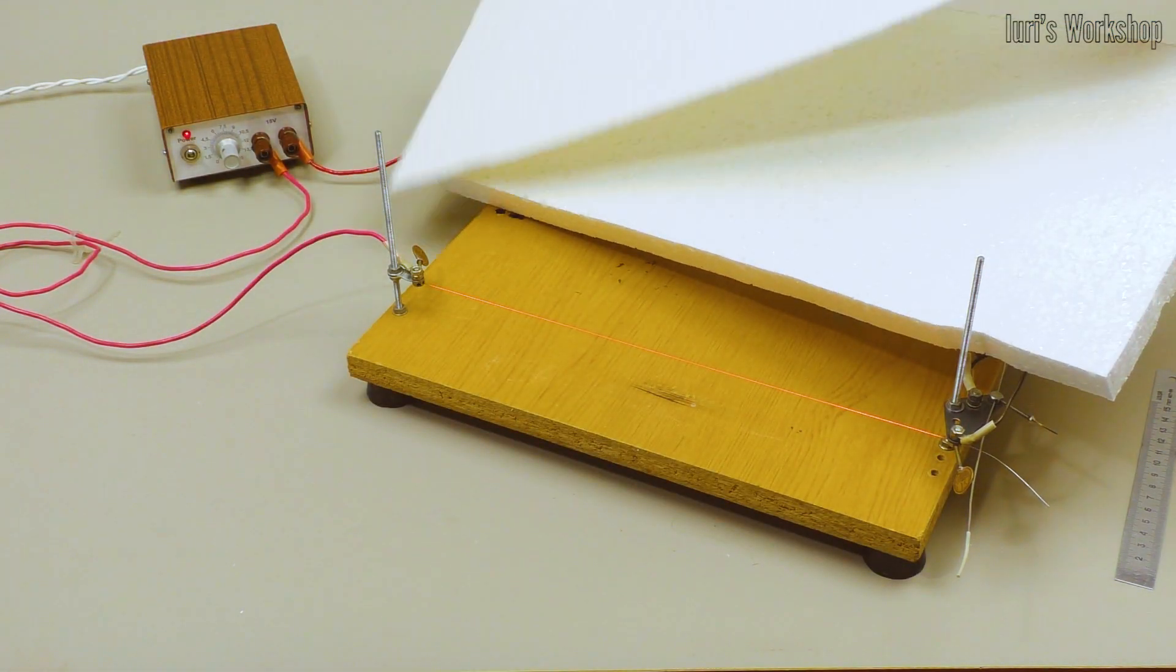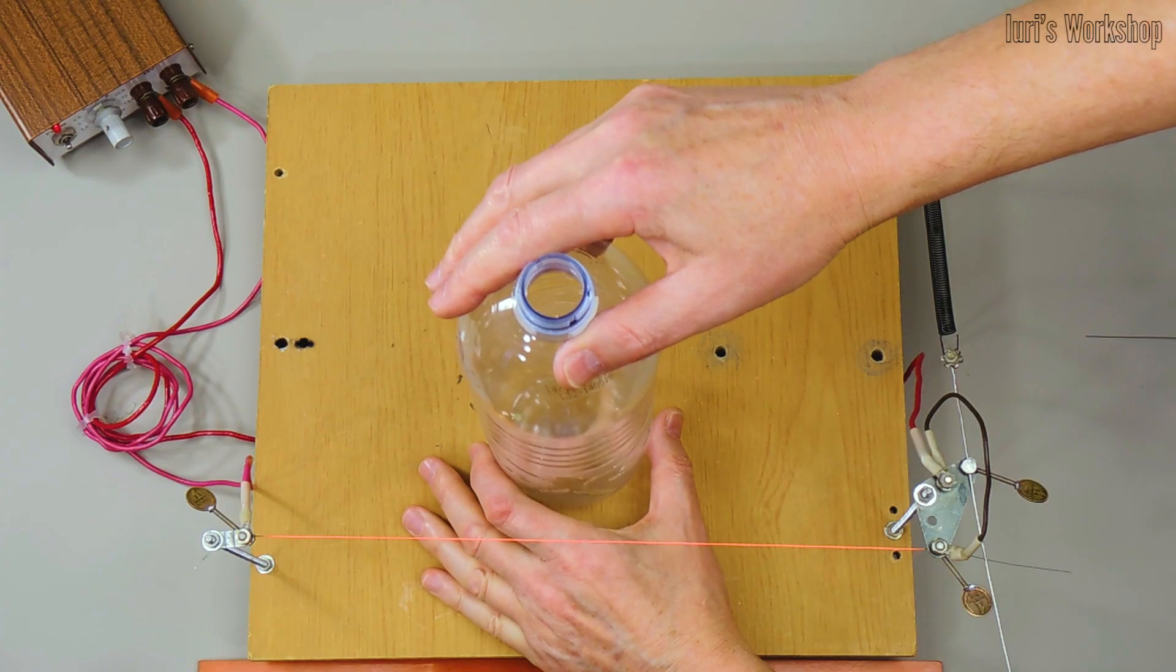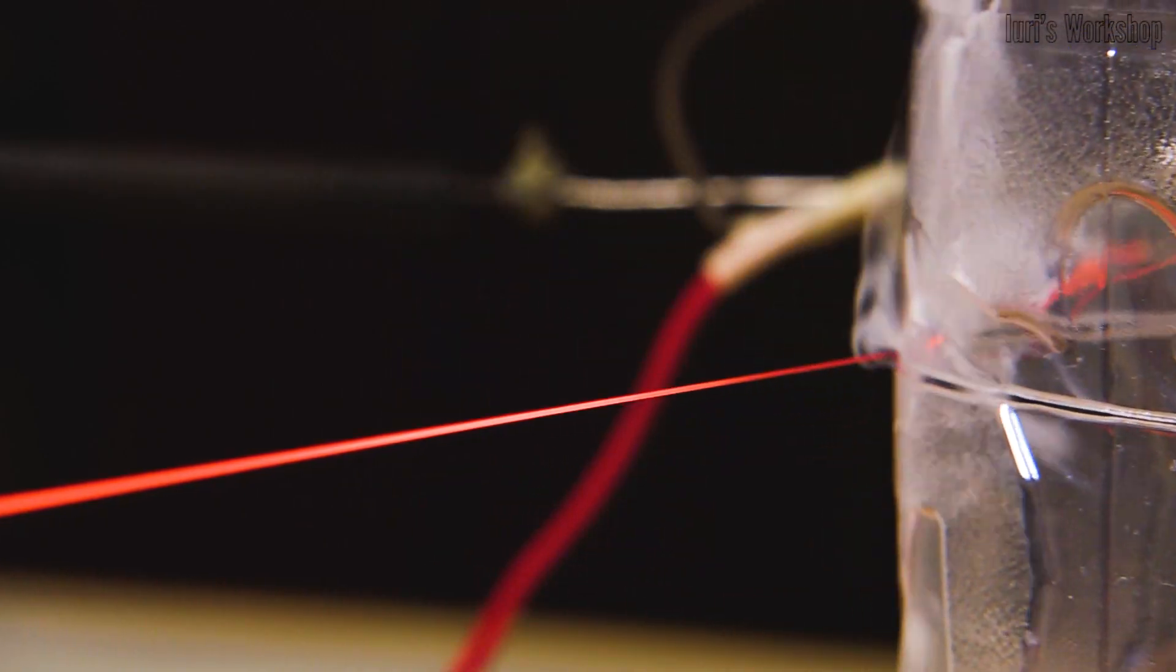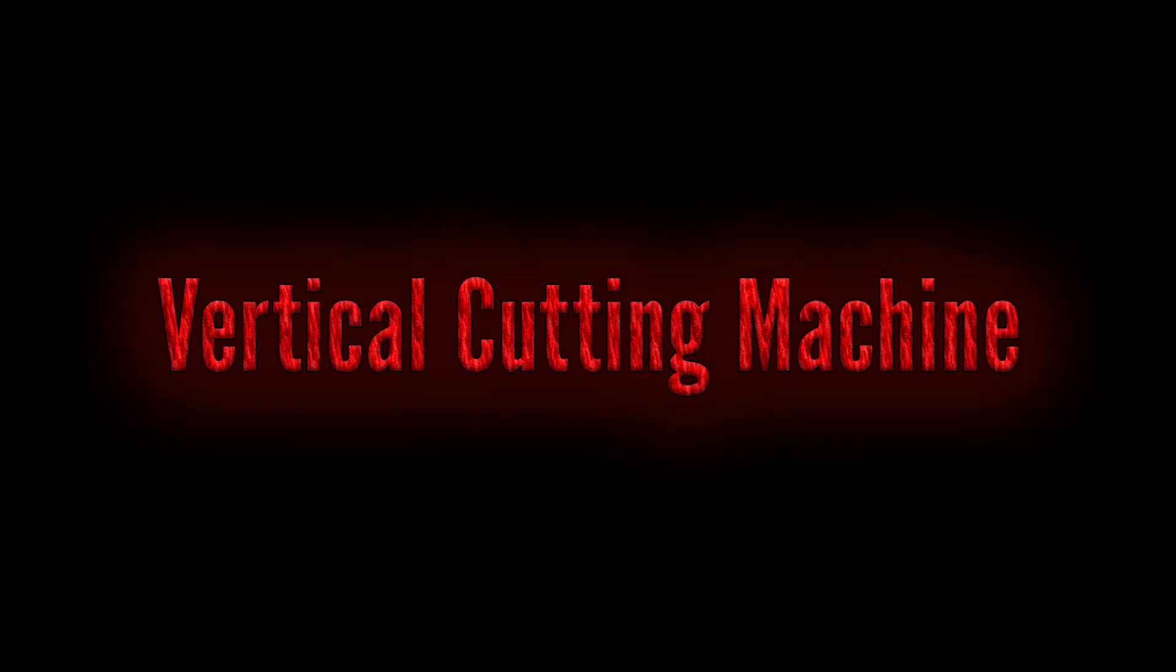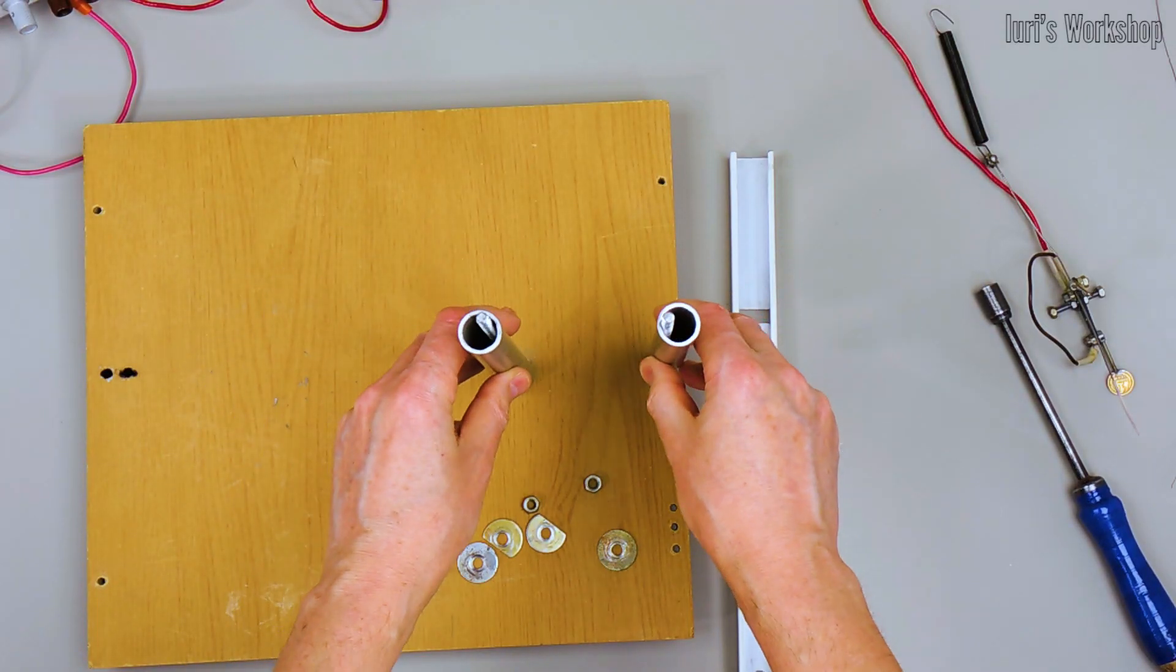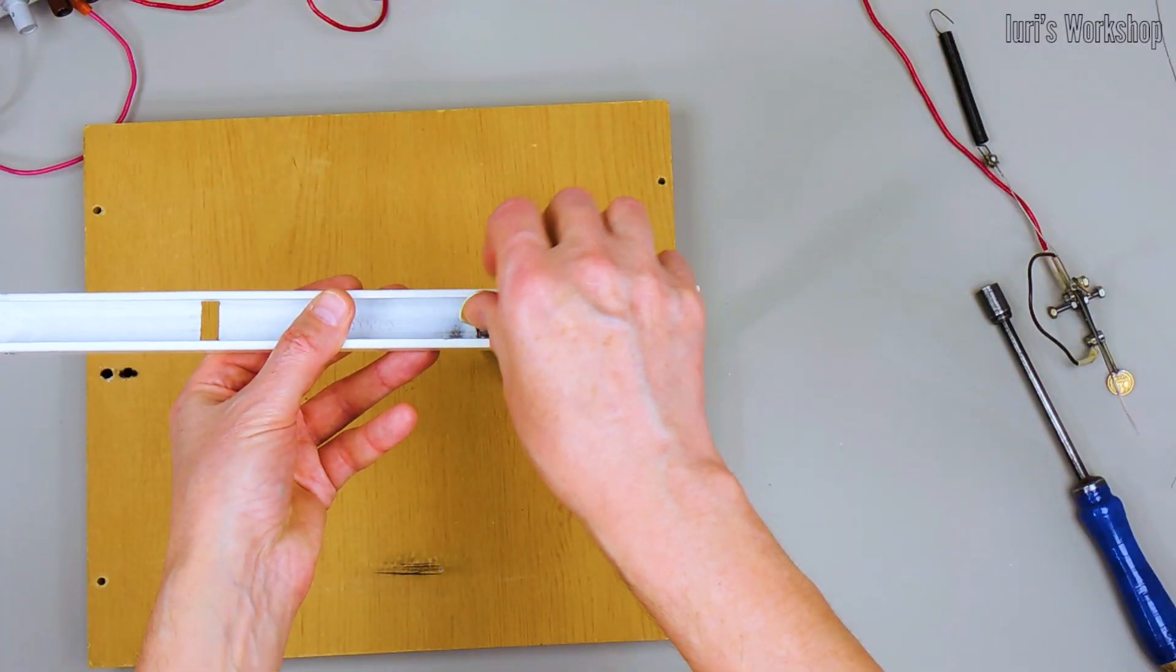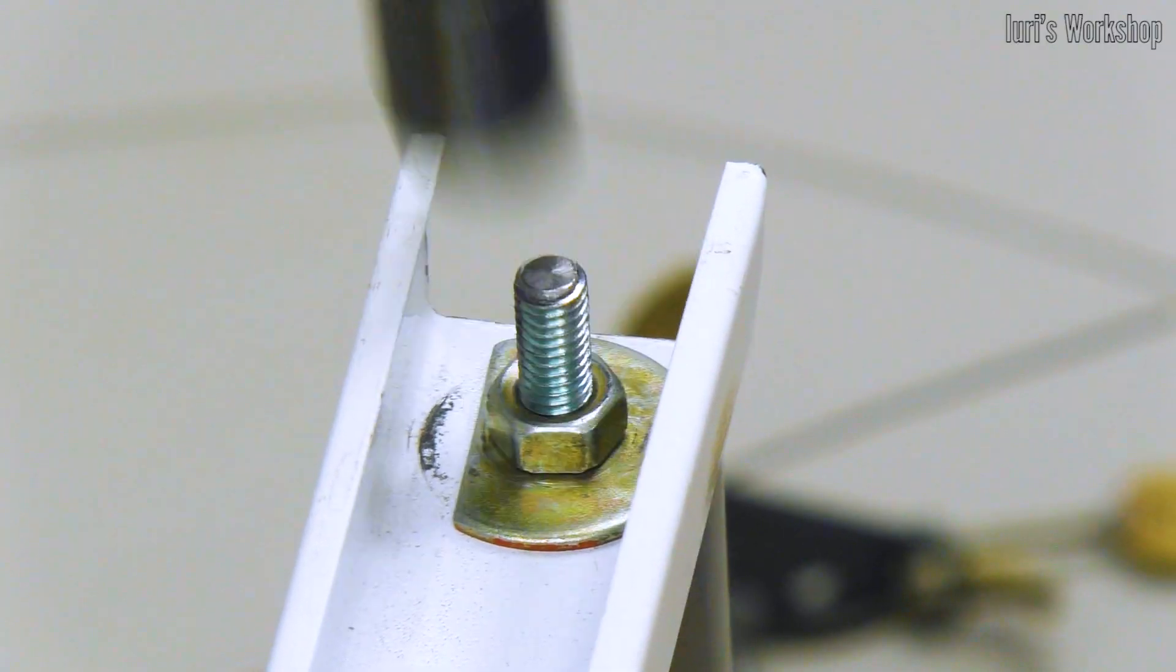For cutting styrofoam and polyethylene terephthalate bottles, a nichrome wire with a diameter from 0.3 to 0.4 millimeters can be used. To build a vertical cutting machine, I used a channel and two pieces of duralumin pipe. I secured these parts with two threaded rods.